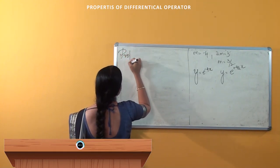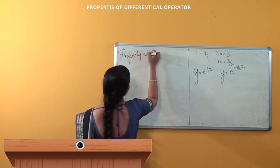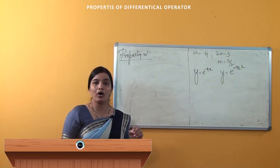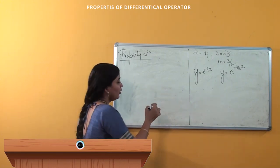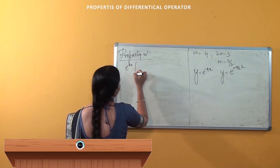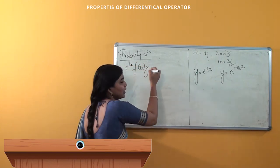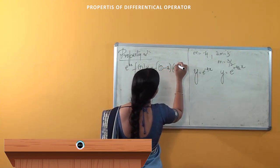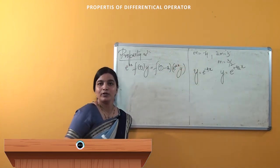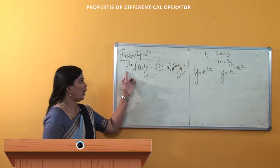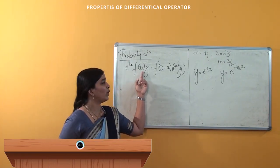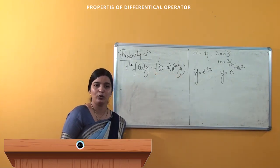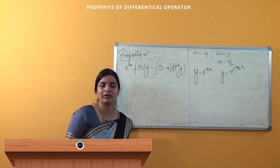The second property says that if f(D) is the differential operator of degree n, then e^(ax)·f(D)·y is nothing but f(D - a)·e^(ax)·y. So if you have an equation of the form e^(ax)·f(D)·y, then it equals f(D - a)·e^(ax)·y. We will solve one problem so you can understand better.